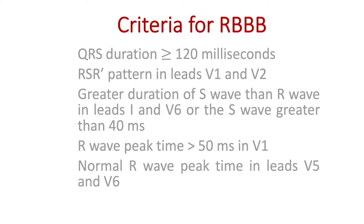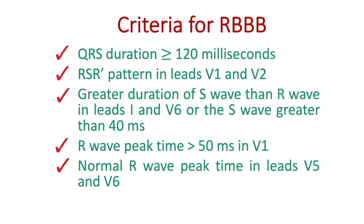These are the characteristic ECG findings of right bundle branch block. First, QRS duration should be greater than or equal to 120 milliseconds. Second, there should be an RSR prime pattern in leads V1 and V2. In leads V5 and V6, the S wave is of greater duration than the R wave, or the S wave is greater than 40 milliseconds. In lead V1, the R wave peak time is greater than 50 milliseconds, and in leads V5 and V6, there is a normal R wave peak time. Regarding T waves, they tend to be discordant to the terminal QRS vector, resulting in inverted T waves in right precordial leads and upright T waves in left precordial leads.